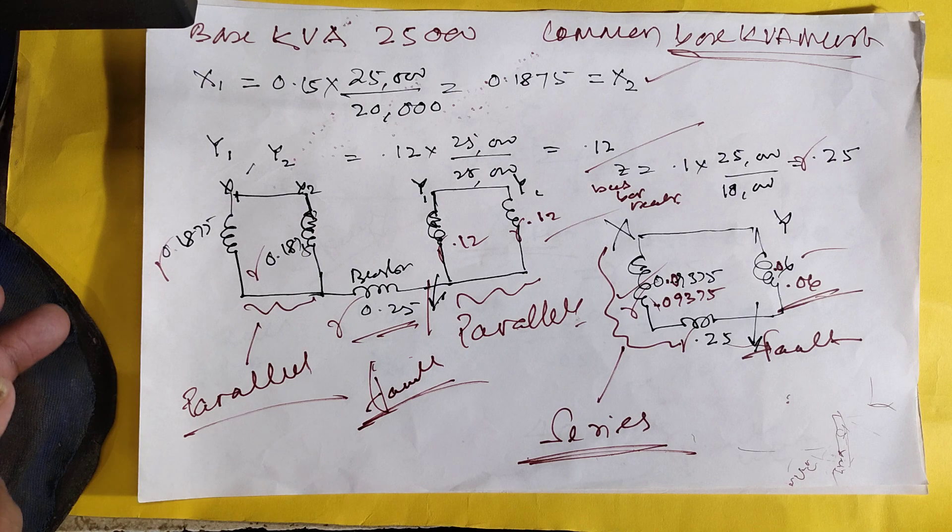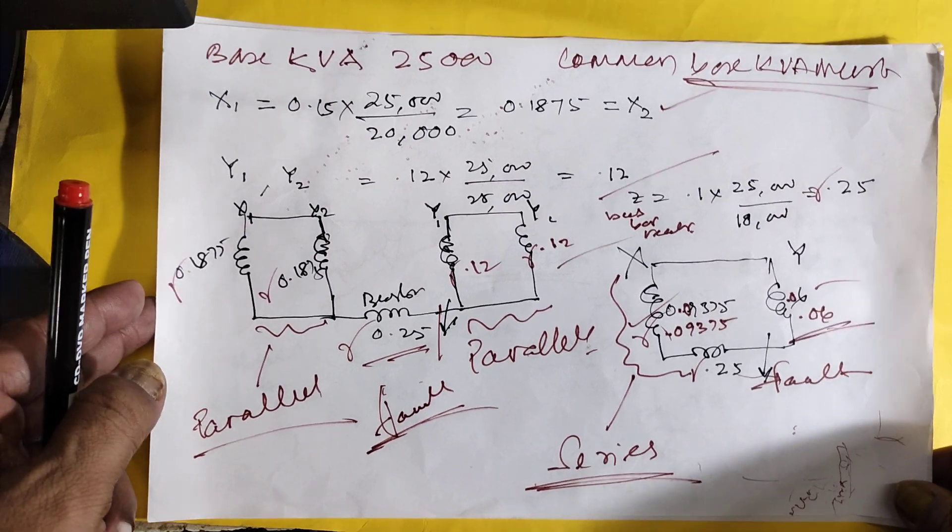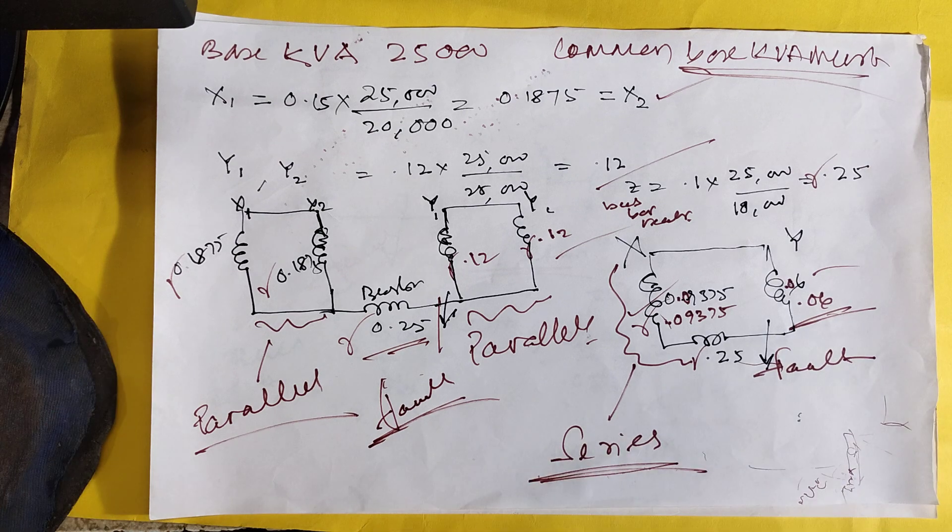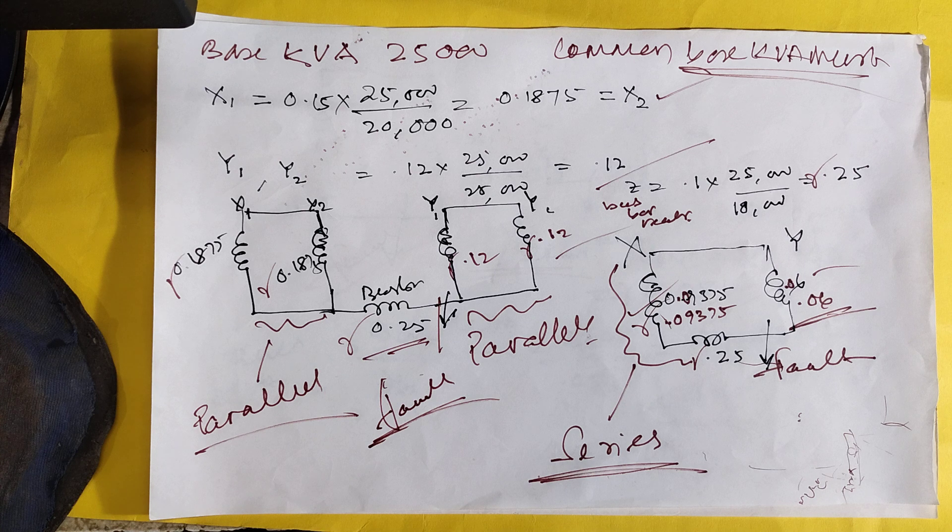So X1 will become, X1 is coming around, for the 20,000 KVA, now the base changes to 25,000 KVA. So X1 equals 0.187. X2 is the same because KVA is 25,000. And this bus bar reactor is 10,000 KVA, that is 0.188, so now the bus bar reactor is 0.25.